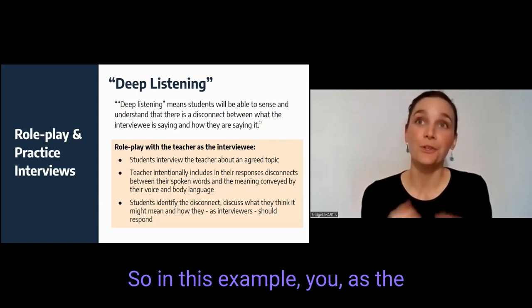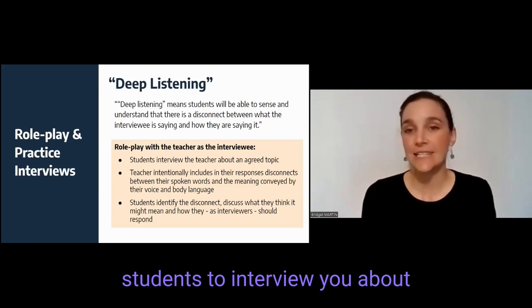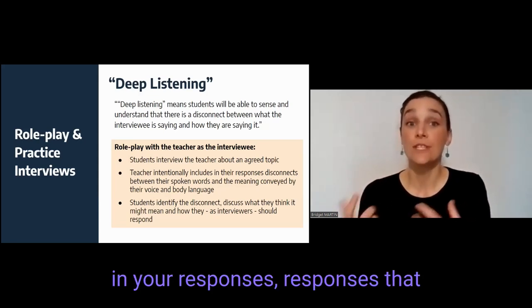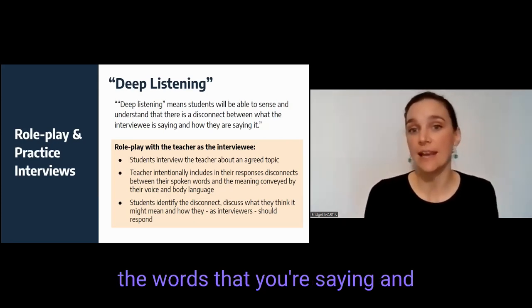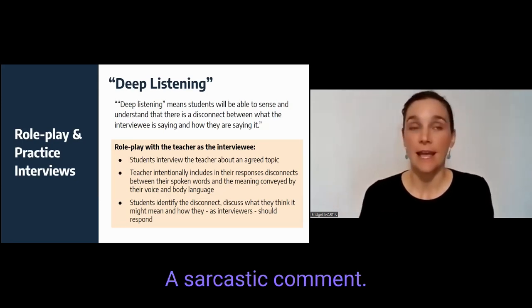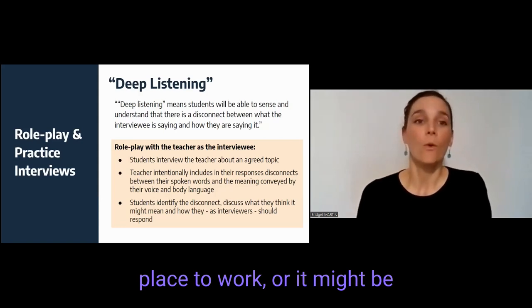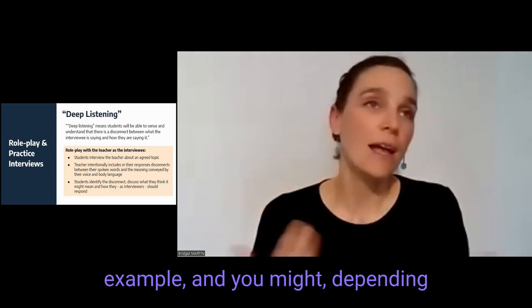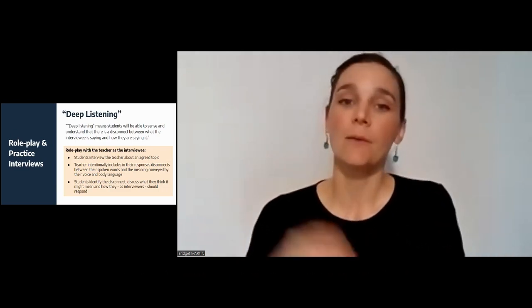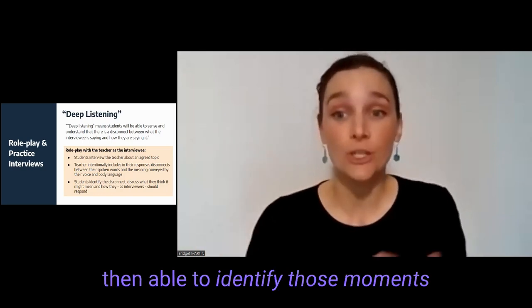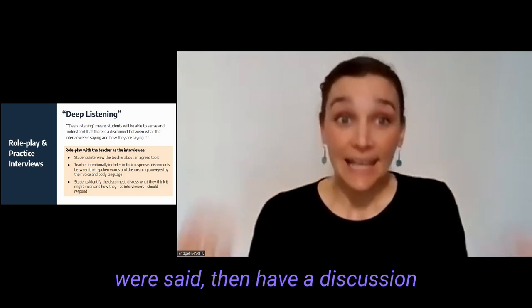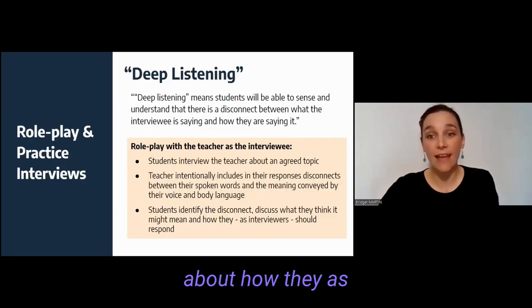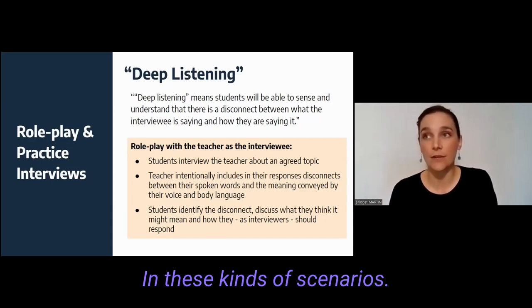In this example, you as the teacher take on the role of the interviewee and ask the students to interview you about whatever agreed-upon topic. You can intentionally include in your responses a disconnect between the words you're saying and the meaning conveyed by your voice and language — a sarcastic comment like 'Yeah, this is a really wonderful place to work,' or showing sadness with downcast eyes and a sad tone. Depending on the age of your students, you might exaggerate it more or less. The hope is that students identify those moments where there was a disconnect between the words and the way they were said, and then discuss: what might that mean, and how should the interviewer respond in these kinds of scenarios?